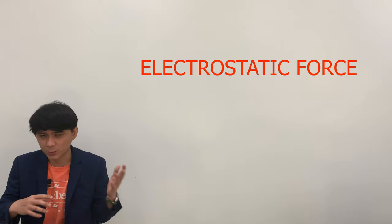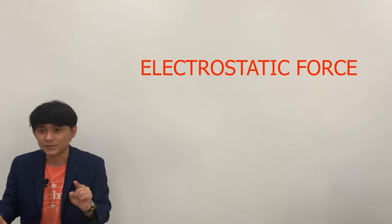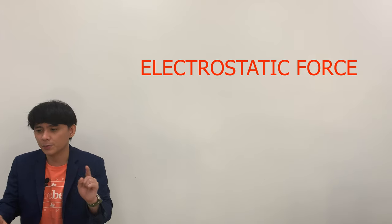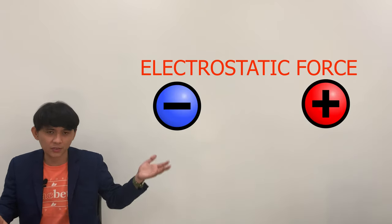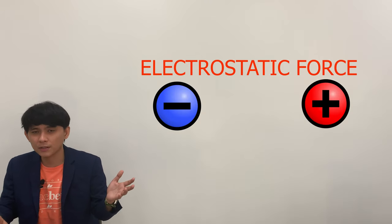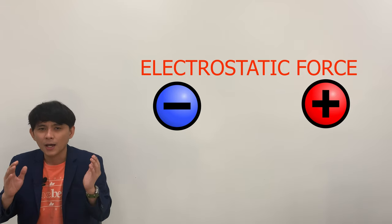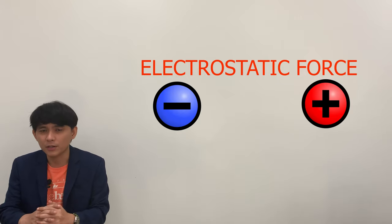If two charged particles are brought near each other, just like what we did earlier, both particles will exert force on each other. This force is what we call the electrostatic force. And since force is a vector, it contains direction. Based on the law of attraction and repulsion, force direction can be determined. For example, if you have positive and negatively charged particles, then the direction of the force is towards each other because they have different charges.